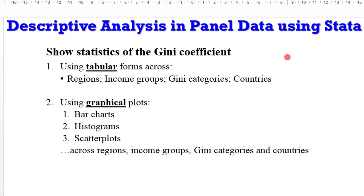In today's tutorial, I'm going to show you how you can obtain descriptive statistics involving any outcome variable that is in your study. In my own case, it's the GNA coefficient. So I'll be using tabular forms to assess statistics of the GNA coefficient involving the regions, the income groups, and the various journey categories and also across the countries.